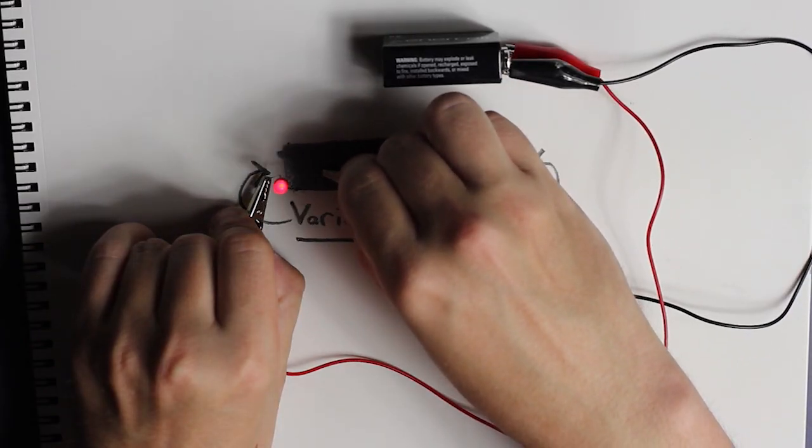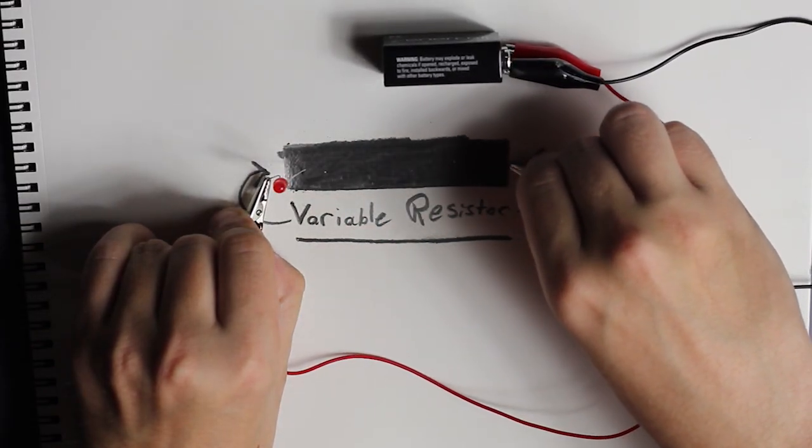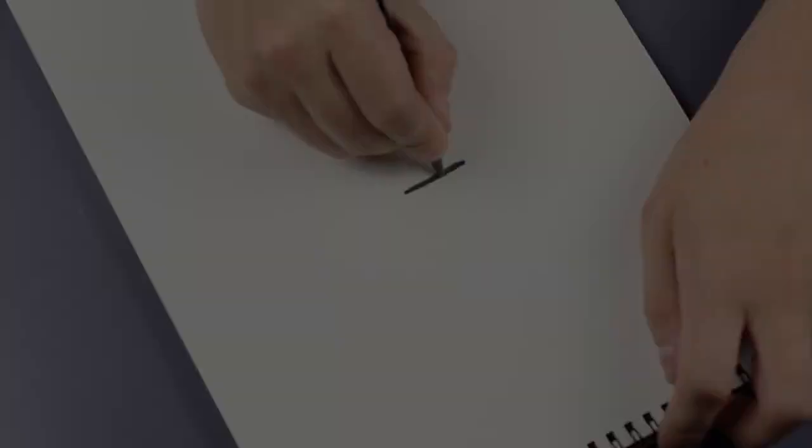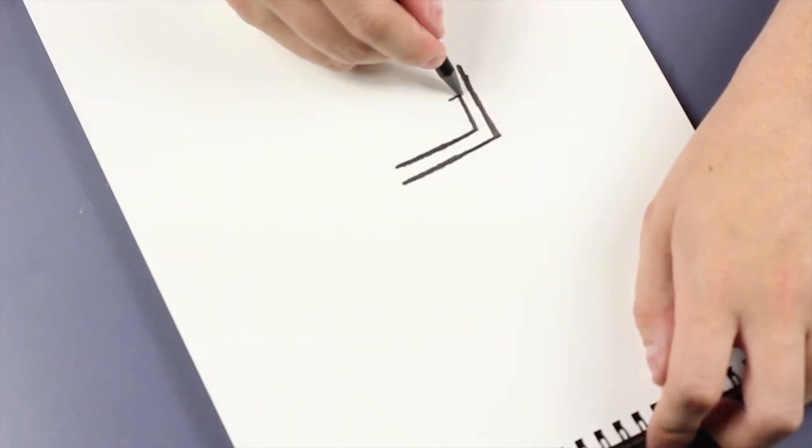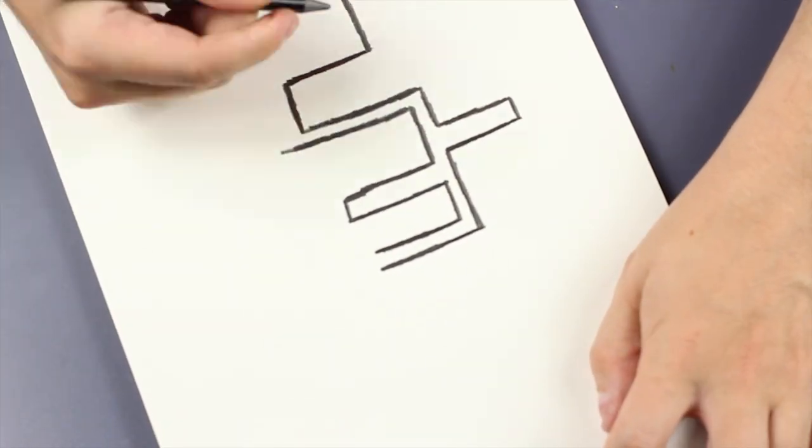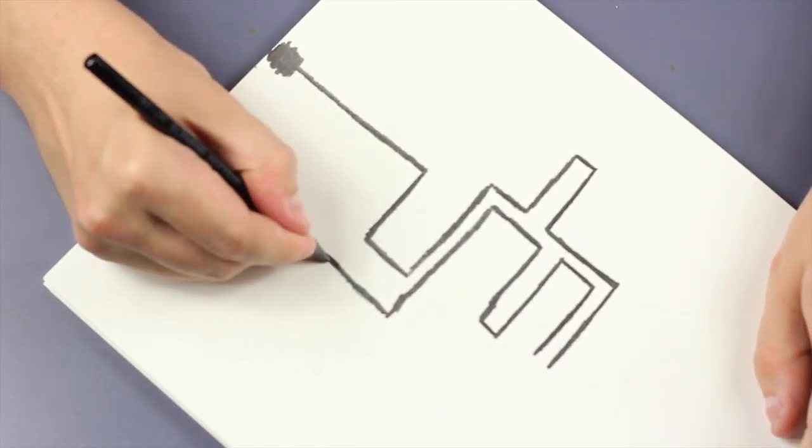You'll also notice that the LED gets brighter and darker depending on how close we get to it. That's because we've actually created a variable resistor. But what if we wanted to make an actual circuit out of this? Would the resistive properties prove to be too great, or could we still transfer enough energy to light and power it up?